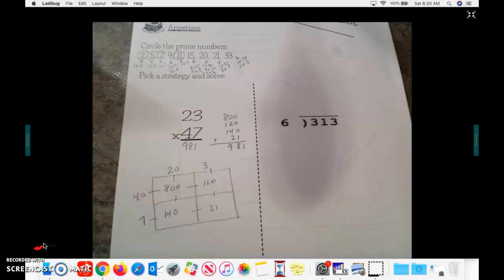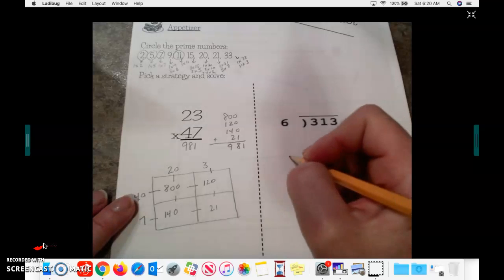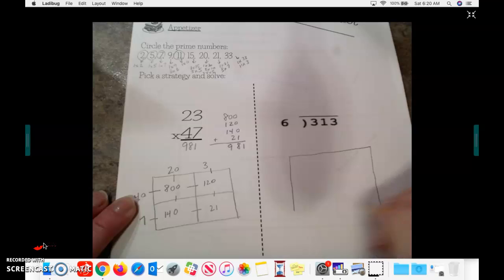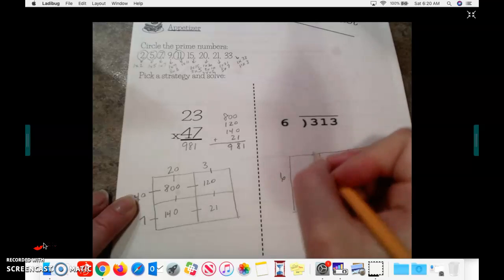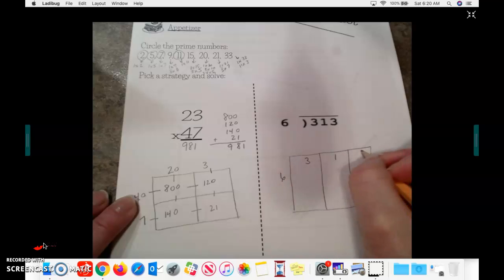Okay. Long division. Again, I'm going to use the box method for long division. I have a three-digit number, so I need three columns. 6 is what I'm dividing by. I have 3, 1, 3.